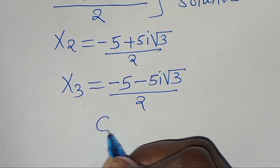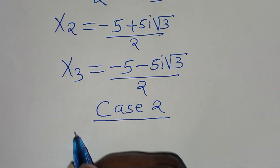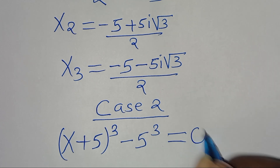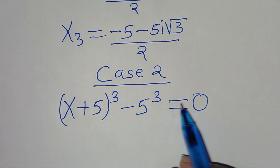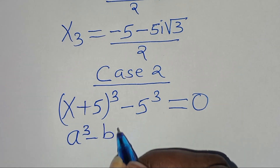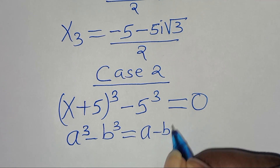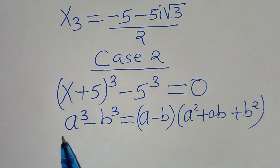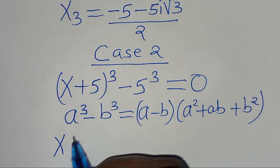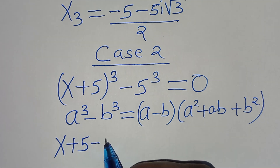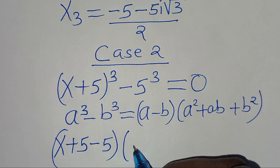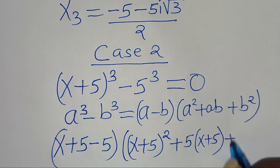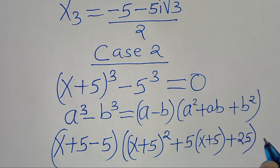Now let's proceed to case 2. In case 2, we have x plus 5 raised to the power of 3, subtract 5 to the power of 3, equal to 0. This is the difference of two cubes, expressed as a cubed minus b cubed, which equals a minus b times a squared plus ab plus b squared. Applying this identity, we have x plus 5 minus 5, times x plus 5 squared plus 5 times x plus 5 plus 25, equal to 0.